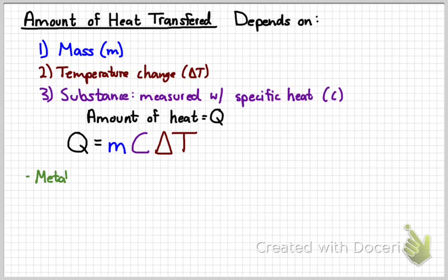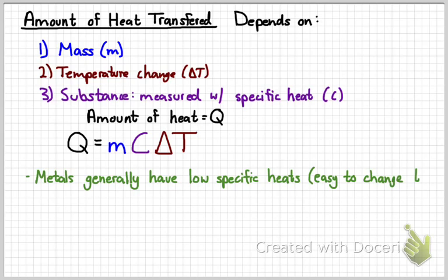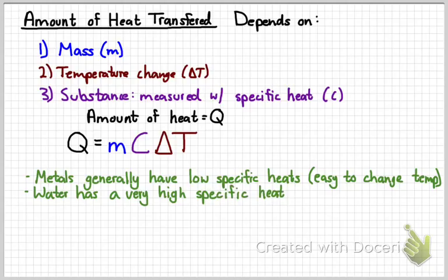Some trends to remember. Metals in general have low specific heats. That's why we make pots and pans out of them. We want the heat to be transferred to what we're cooking. Water has a very high specific heat. That's why the radiator in your car is filled with water. It takes a lot of energy to heat water up. So, water is capable of absorbing a lot of heat without really changing its temperature a whole lot.